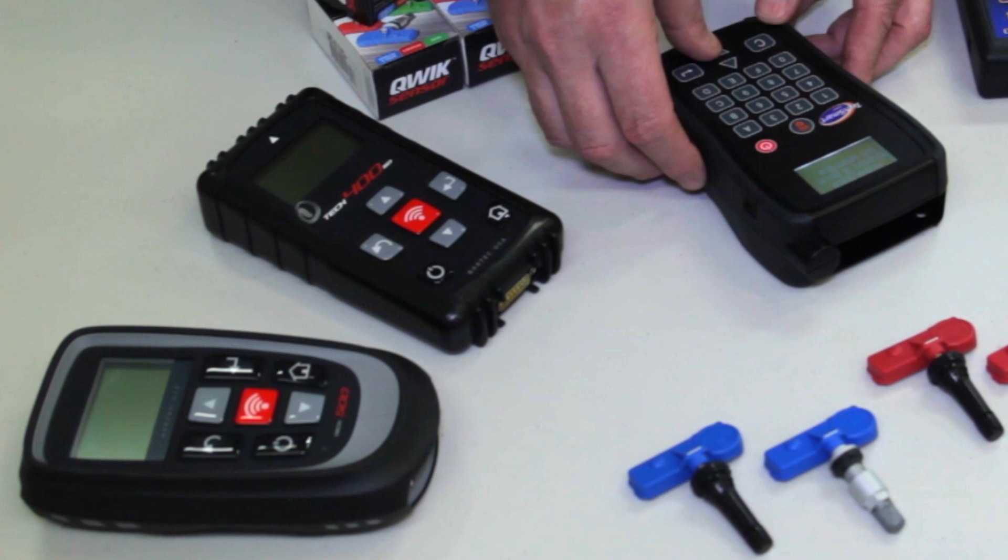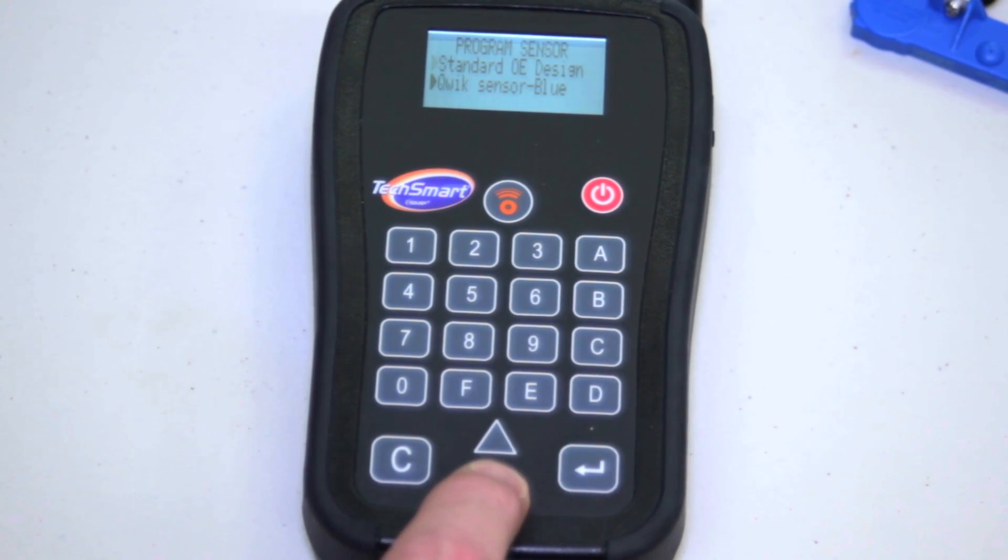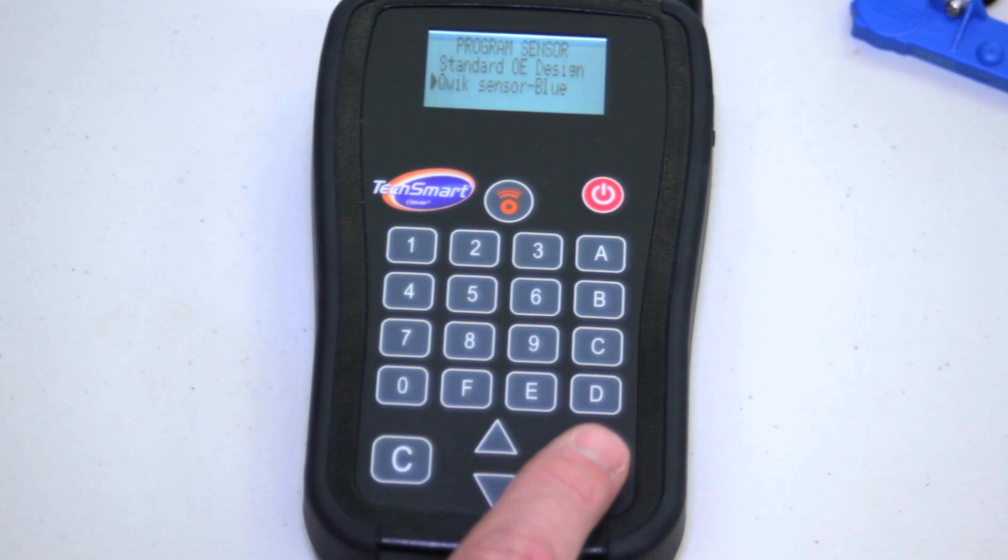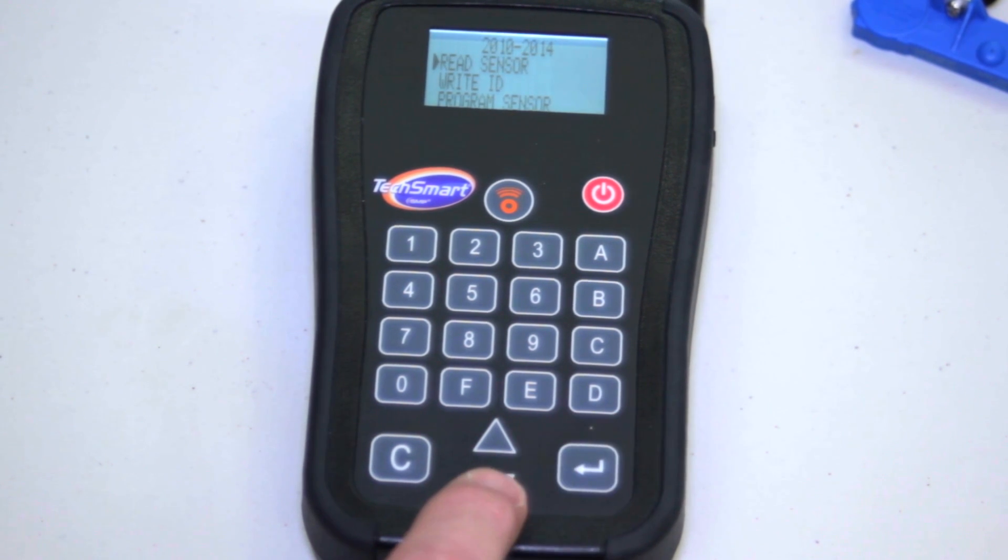It then asks if you're going to do the standard OE design or the quick sensor, and it actually states quick sensor blue, so I know I have the right application. I enter quick sensor.